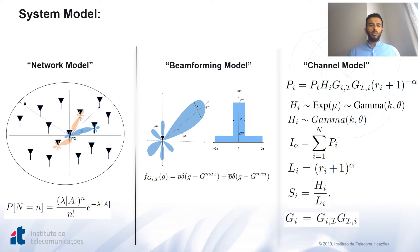In the beamforming model, we considered a sectorized antenna model, where Gmax is the main lobe gain, while Gmin is the side lobes gain. Since the beam orientations are uniformly distributed from minus pi to pi, the PDF of the gain at the receiver or transmitters can be concluded, which is given by F of G.